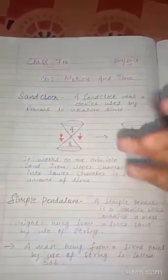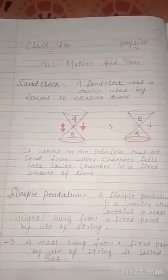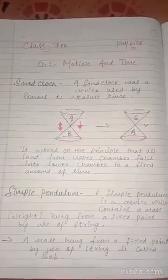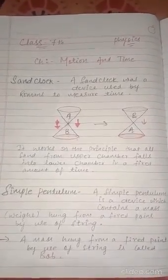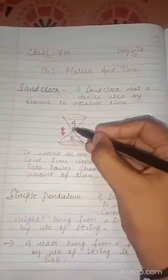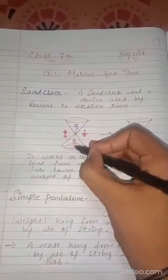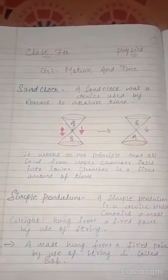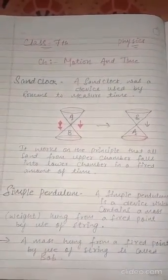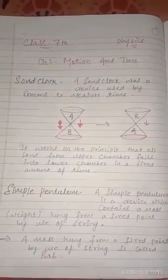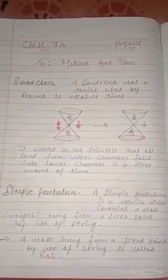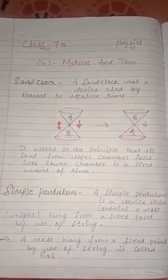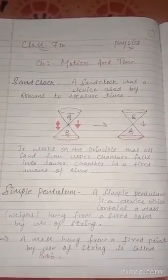ये upper chamber A में sand को हम लोग fill करते हैं — we used to fill upper chamber A with sand. And slowly and steadily, sand from A falls into B. A से sand धीरे-धीरे B में गिरता है। Sand A से B में आ रहा है।